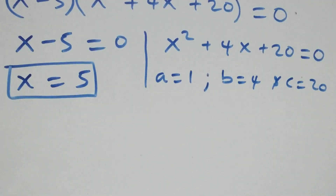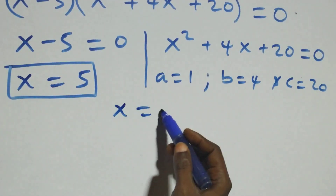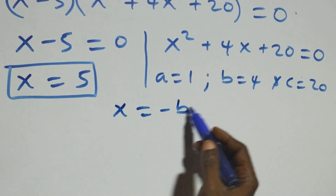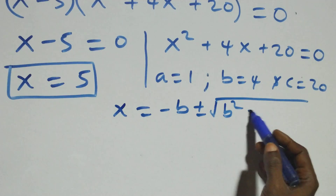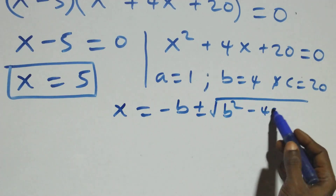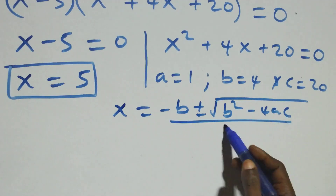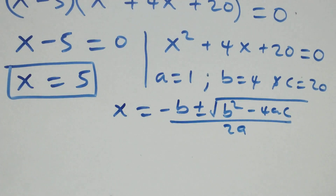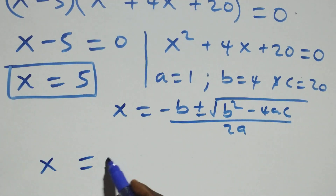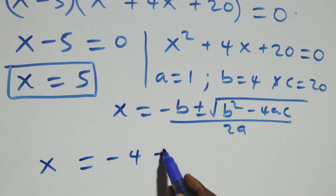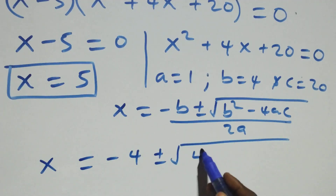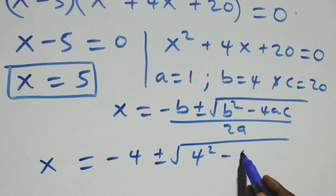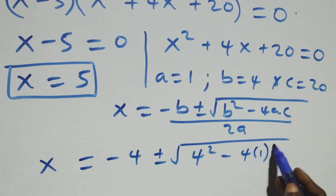From the quadratic formula x equals minus b plus or minus square root of b squared minus 4ac, all over 2a, we get x equals minus 4 plus or minus square root of 4 squared minus 4 times 1 times 20, all over 2 times 1.